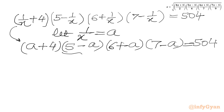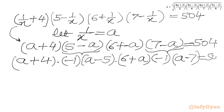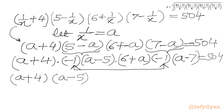I will take -1 common from the second bracket and -1 common from the fourth bracket. So we get (a+4) · (-1)(a-5) · (a+6) · (-1)(a-7) = 504. Since (-1)(-1) = +1, we can write (a+4)(a-5)(a+6)(a-7) = 504.